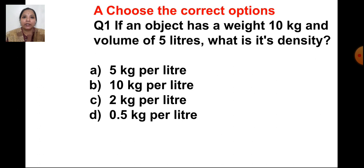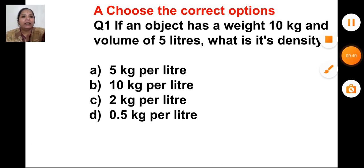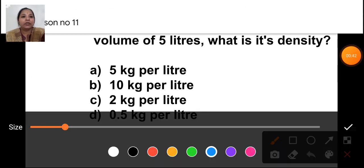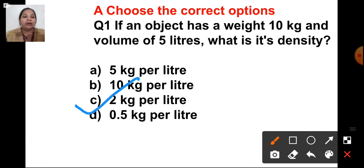The first question is: choose the correct options. If an object has a weight of 10 kg and volume of 5 liters, what is its density? We know the formula for density is density equals weight upon volume. The options are 5 kg per liter, 10 kg per liter, 2 kg per liter, and 0.5 kg per liter. The answer is C, 2 kg per liter.